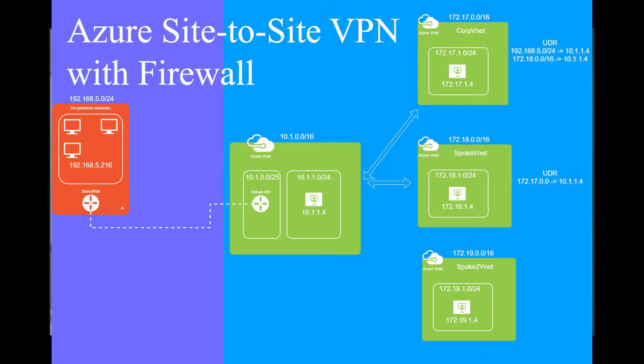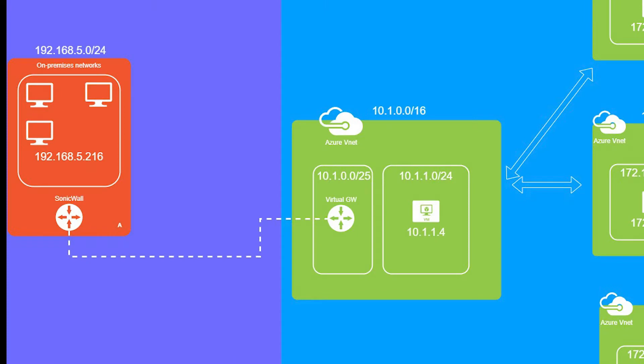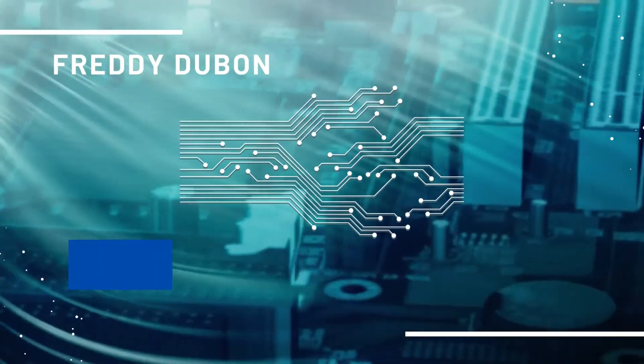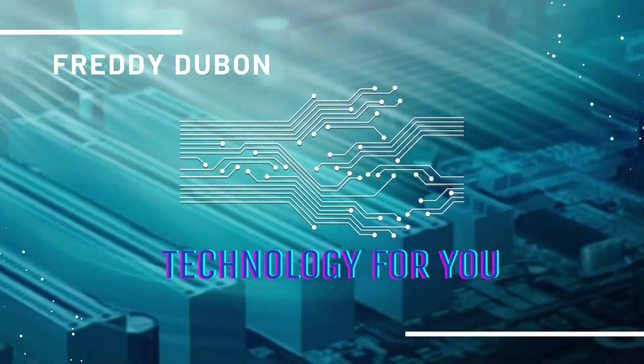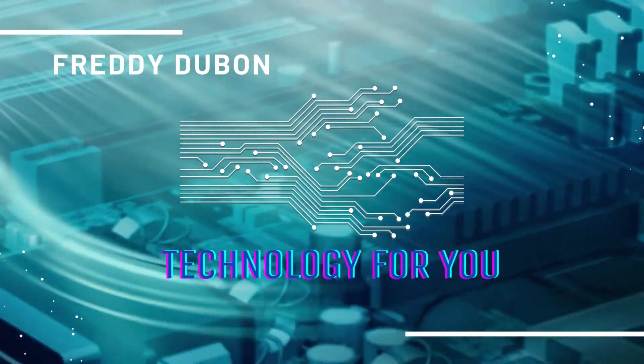Hey everybody, Freddy here with another video. This is the first video in a series that will walk you through setting up the design you see on your screen. The first video covers how to get the SonicWall connected to the Azure VPN gateway — this is the first step, connecting on-premises to Azure. I hope you enjoy the video; please like and subscribe to the channel.